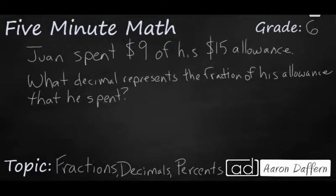Here's another common type of example. Juan spent $9 of his $15 allowance. What decimal, that's important, represents the fraction of his allowance that he spent? So we need to first figure out the fraction of his allowance that he spent.